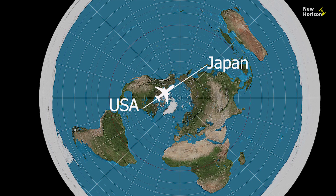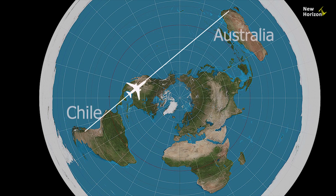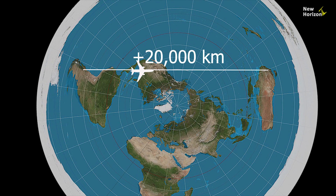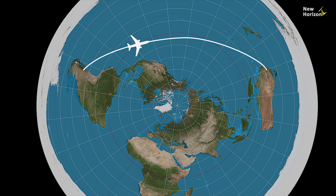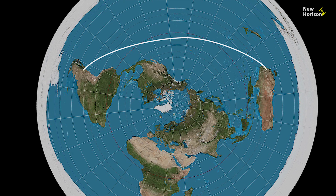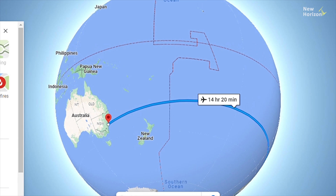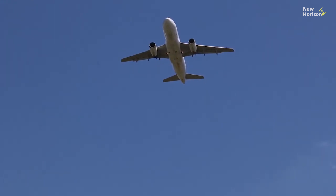If the Earth was flat, the flight path between Washington and Tokyo would be straight. On the flat earth map, consider the flight path from Santiago, Chile to Sydney, Australia — it would be over 20,000 km long and an airplane would need more than 24 hours to cover it. But in reality, a plane takes only 14 hours from Santiago to Sydney using this route. This is only possible in the globe model.